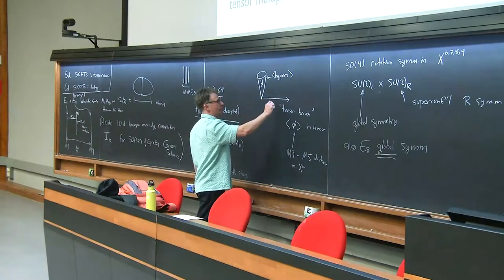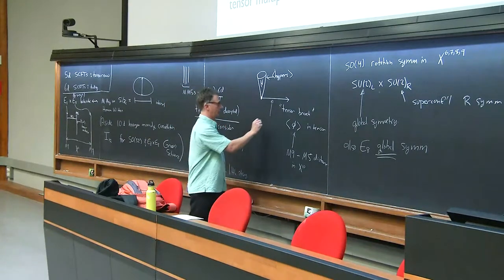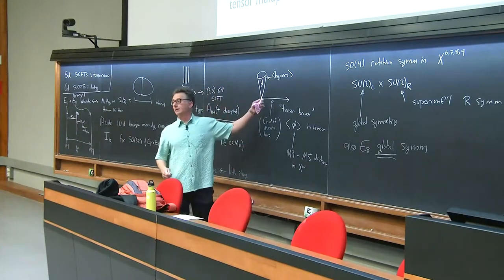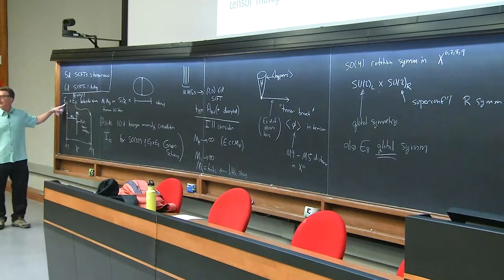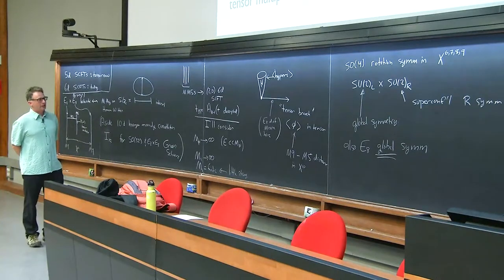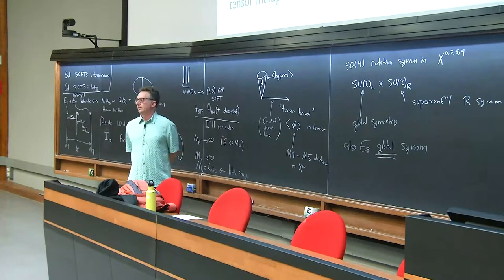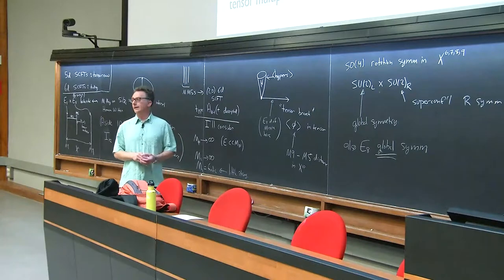If we move along the tensor branch, away from the origin, the E8 degrees of freedom all become massive. We don't really notice the E8 symmetry unless we're at the point with the unbroken E8 gauge symmetry. I shouldn't really say massive since it's a conformal field theory — more precisely, there's a conformal field theory with operators that carry E8 global symmetry at this point in the moduli space.